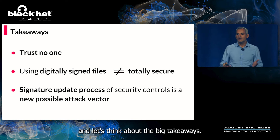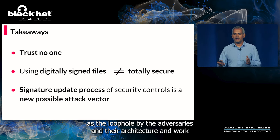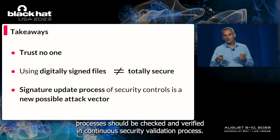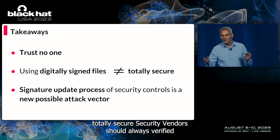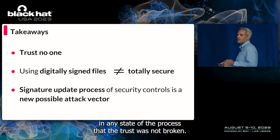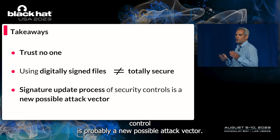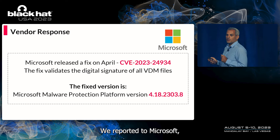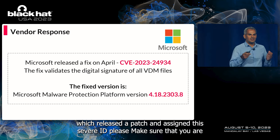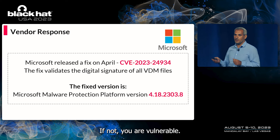Key takeaways: first, trust no one — even the most reliable security controls might be used as a loophole by adversaries, and their architecture and workflows should be verified in a continuous security validation process. Second, using digitally signed files does not always mean totally secure — security vendors should verify at every step of the process that trust has not been broken. Finally, the signature update process of security controls is a new possible attack vector, and further research is very important in this field. We reported this to Microsoft, which released a patch and assigned a CVE ID. Please make sure you are using the patched version of the malware protection platform or above — if not, you are vulnerable.